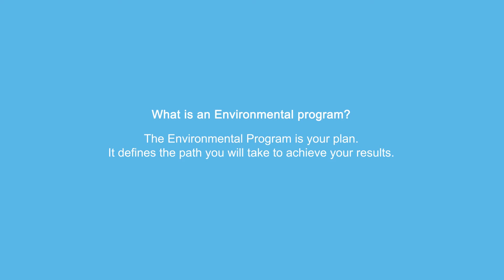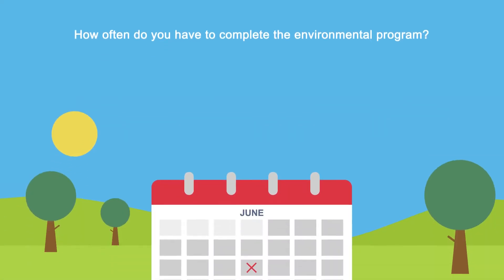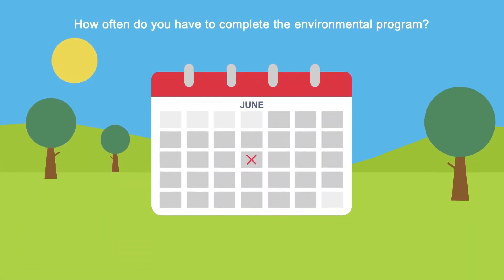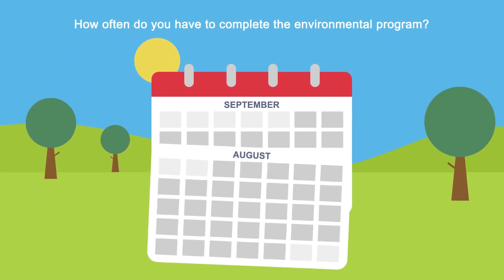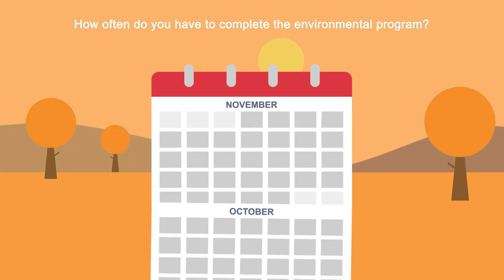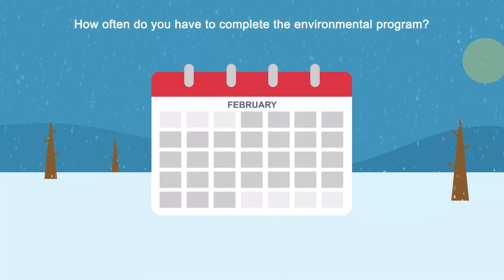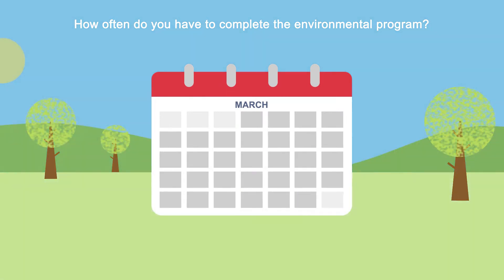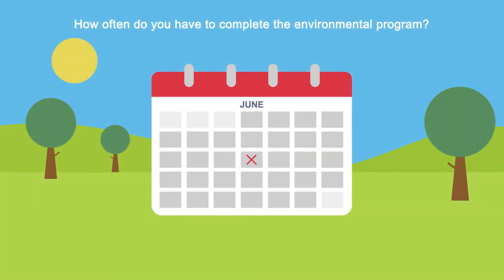The plan is intended to define the path you would take to achieve your results. Typically, the environmental programme is completed each year on the certification anniversary date, but it can take place at any time of the year, providing it is completed, as a minimum, every 12 months.